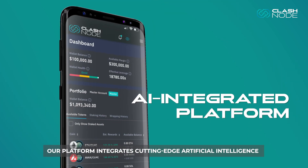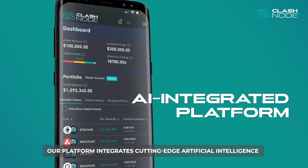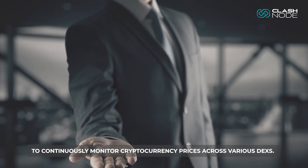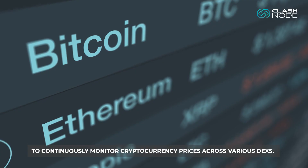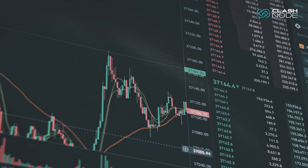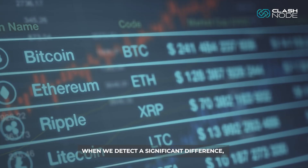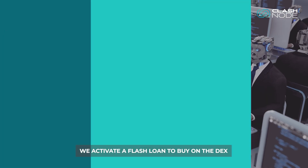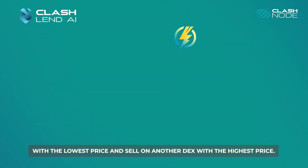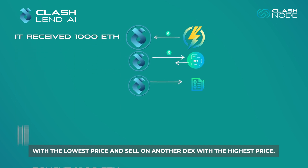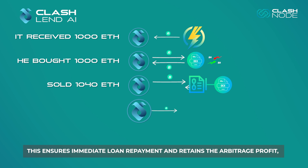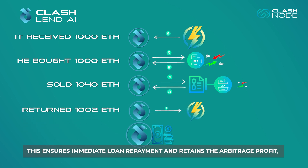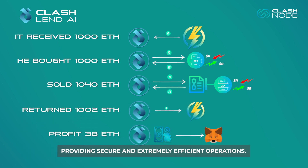Our platform integrates cutting-edge artificial intelligence to continuously monitor cryptocurrency prices across various DEXs. When we detect a significant difference, we activate a flash loan to buy on the DEX with the lowest price and sell on another DEX with the highest price. This ensures immediate loan repayment and retains the arbitrage profit, providing secure and extremely efficient operations.